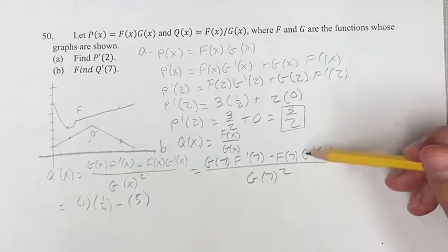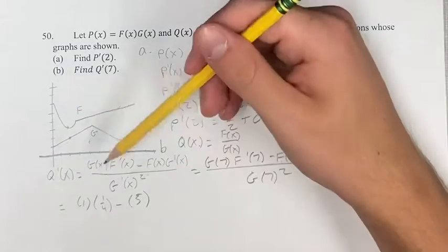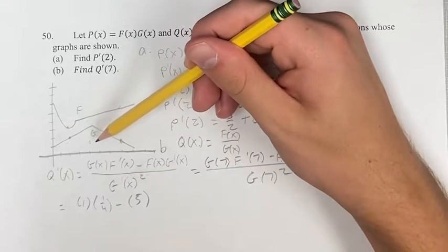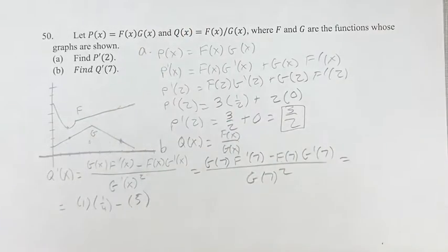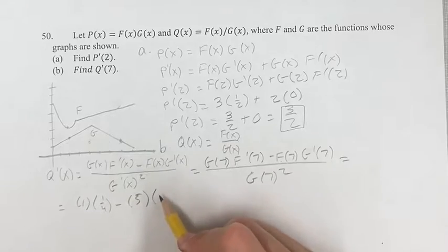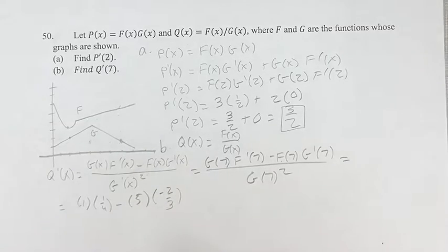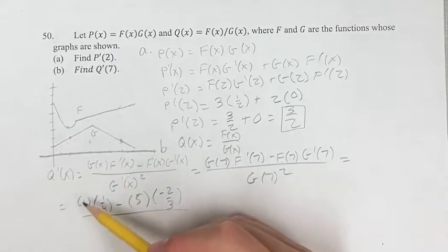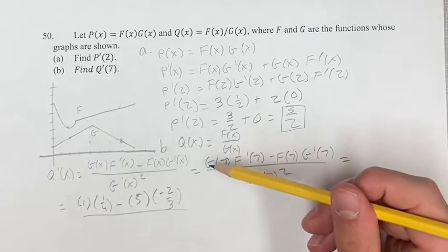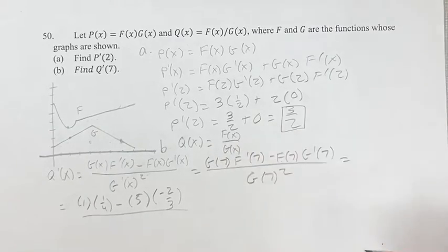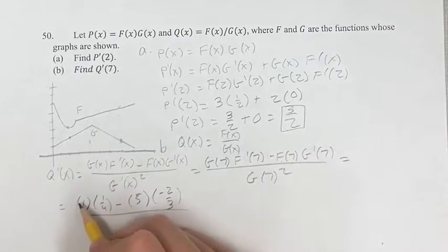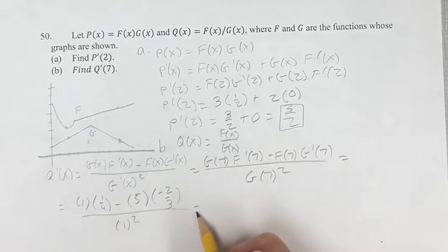Times the slope of G at 7. We can go 1, 2, down, 1, 2, 3 to the right. So it's negative 2 divided by 3. And then this is over the value of G when x equals 7, which we've already found, as 1, and then just squared.